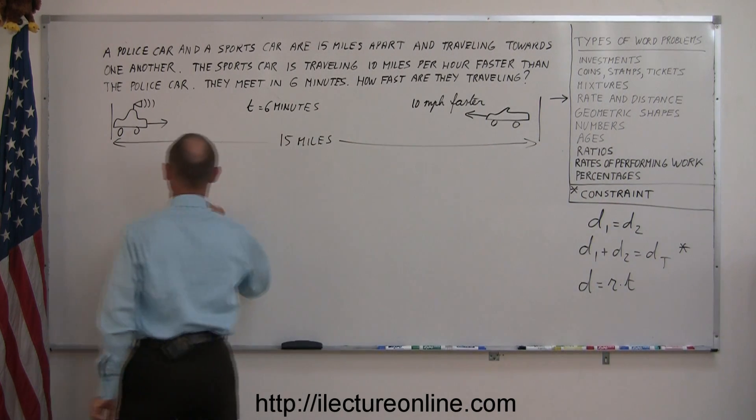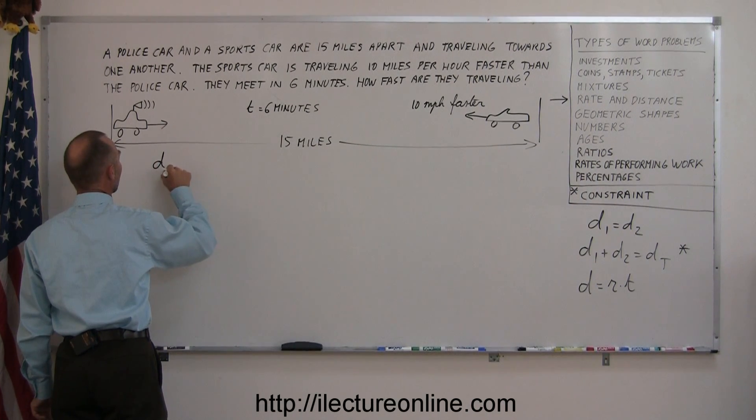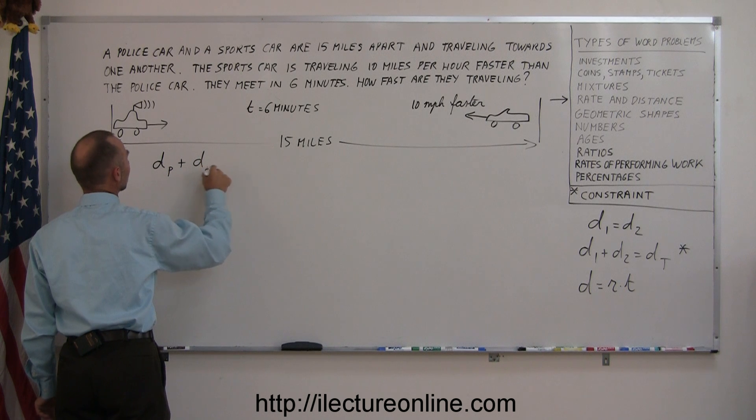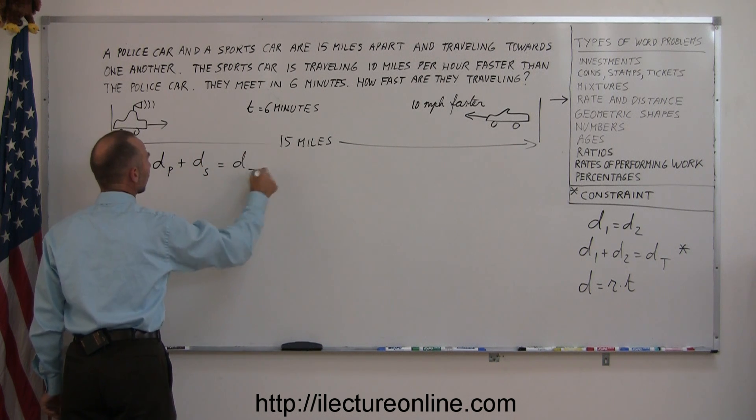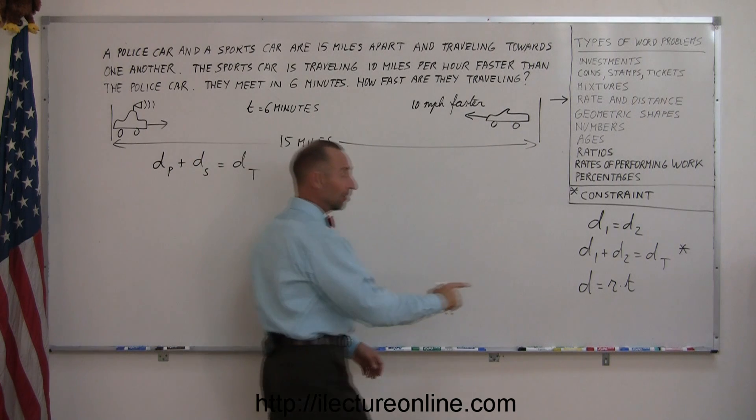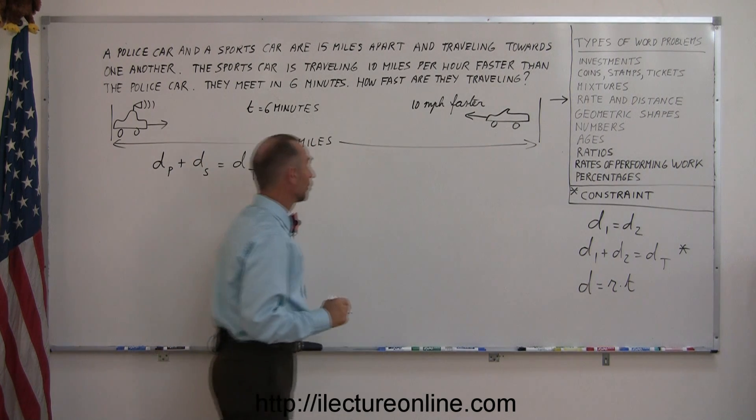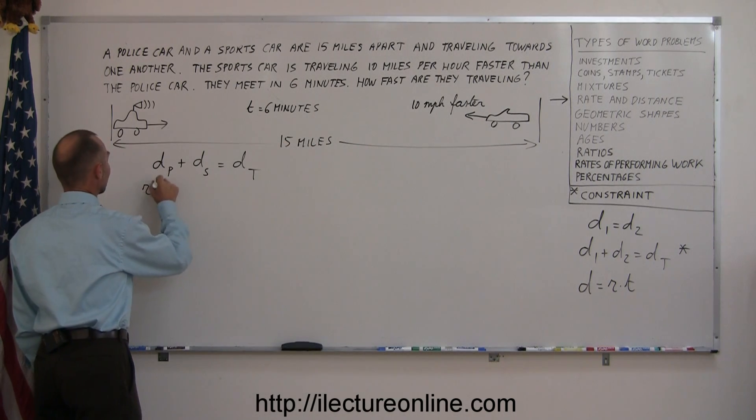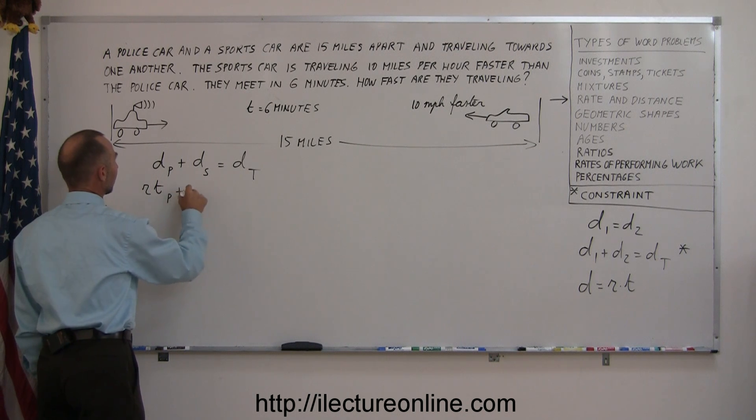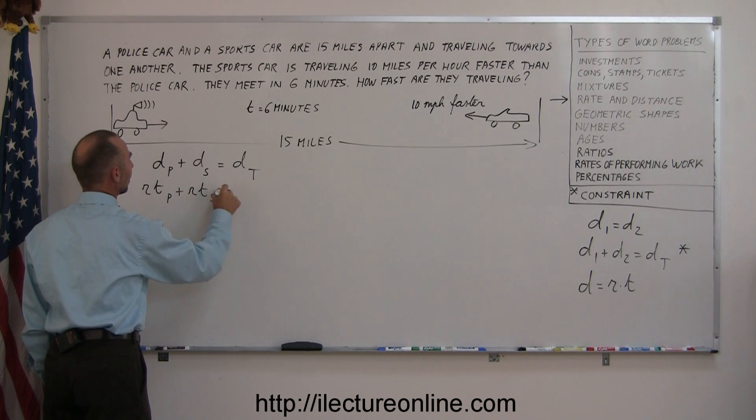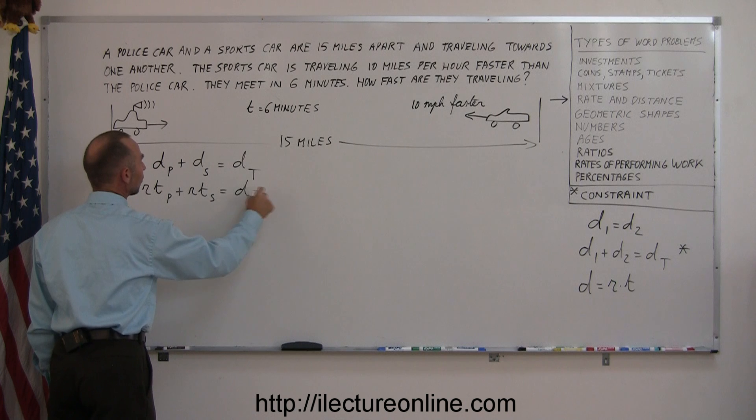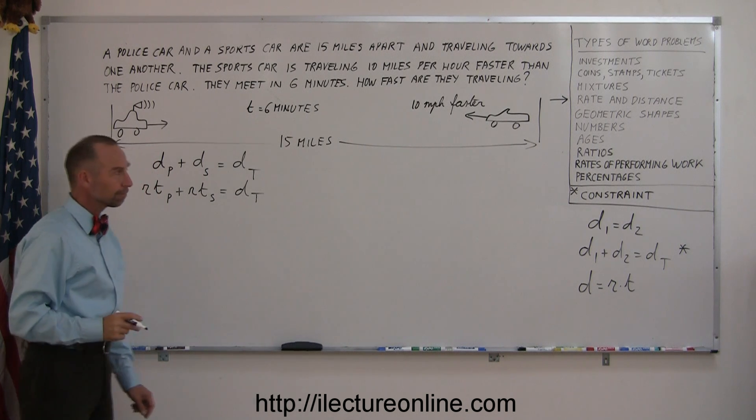So let's try that. So distance by the police car plus the distance by the sports car equals the total distance traveled. And again, remember that the distance is the rate times the time. So that means the rate times the time of the police car plus the rate times the time of the sports car equals the total distance traveled.